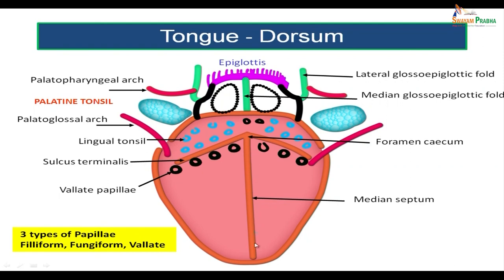This is the midline fibrous septum which divides the tongue into two parts, and this is the prominent sulcus terminalis. This is the oroepiglottis present in the pharynx. You see the septum extending from the back of the tongue to the epiglottis — this fold is called the median glossoepiglottic fold. On the sides, there is another fold extending from the tongue to the lateral wall of the pharynx, called the lateral glossoepiglottic fold. In between these two folds, there is a circular depression called the vallecula.